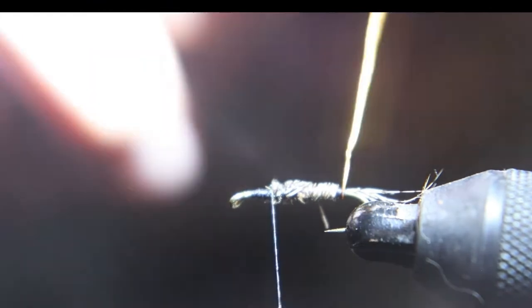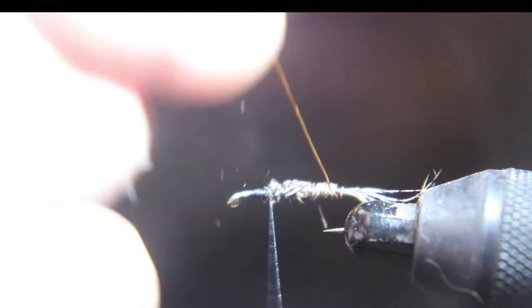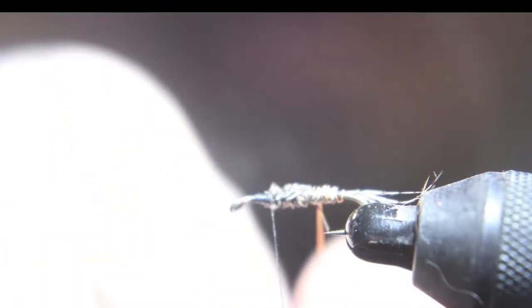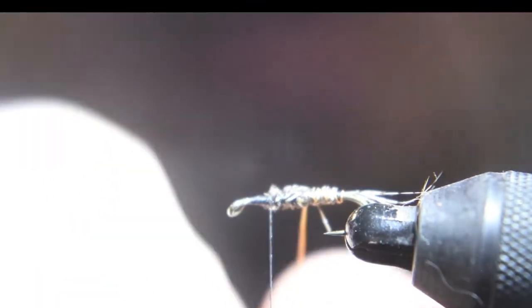Now you're going to rib this fly in the opposite direction you wrap the pheasant tail. Let's help hold it down and you go wire so it shows up better.